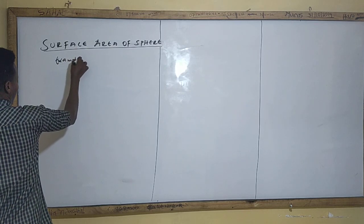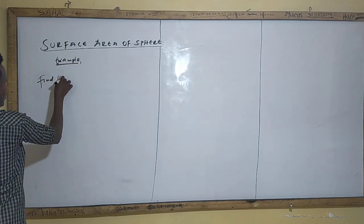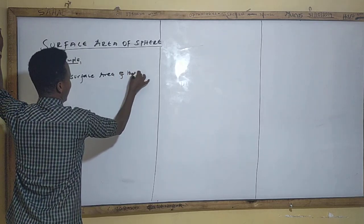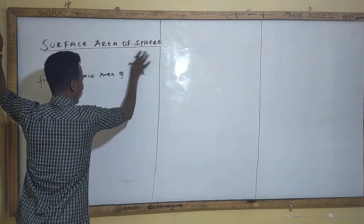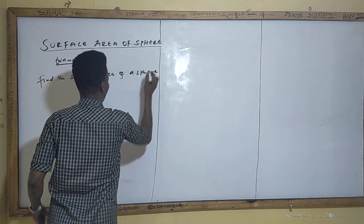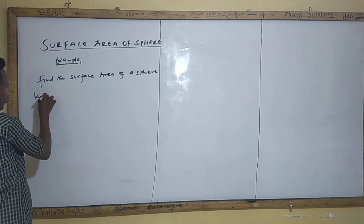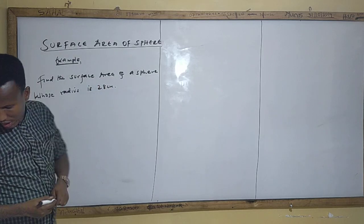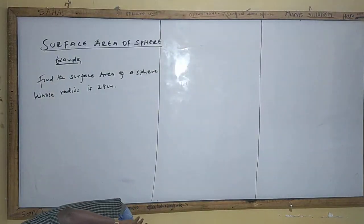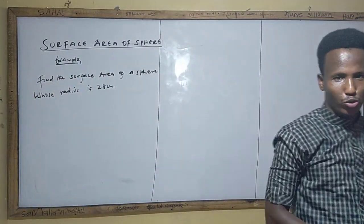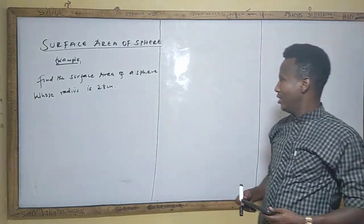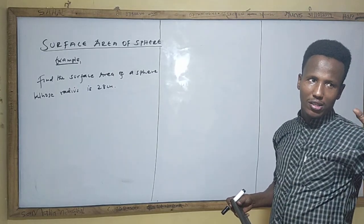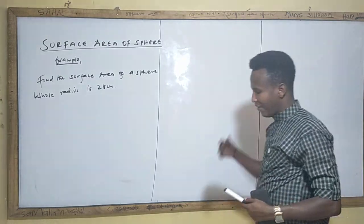Let's start with the first example. Example one: find the surface area of a sphere. Find the surface area of a sphere whose radius is 28 centimeters. In case you see any other examples, you are expected to know all formulas that will help you solve any question. Here we are talking about the sphere, which is made up of four concentric circles.